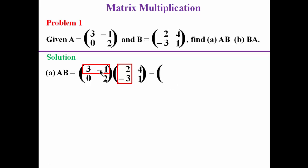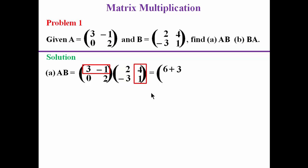We multiply and sum up the corresponding elements: 3 times 2 gives 6, negative 1 multiplied by negative 3 gives positive 3, so that gives us plus 3. We have multiplied the corresponding elements and added them. We still hold the first row in the first matrix.